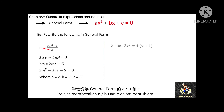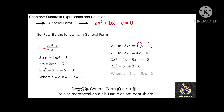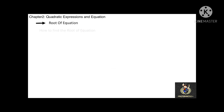The next example: 2 plus 9x minus 2x squared equals 4(x plus 1). First, expand the bracket: 4 multiplied with x plus 4 multiplied with 1. Then rearrange into general form: 2x squared minus 5x plus 2 equals 0, where a equals 2, b equals negative 5, and c equals 2.